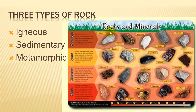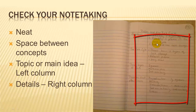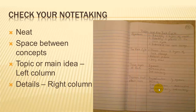There are three types of rock you need to know about: igneous, sedimentary, and metamorphic. Take a second to look at your notes. Make sure you're taking your notes in Cornell note format, which means the topic or main idea goes on the left side and the details go on the right. Good notes take space — don't squish everything onto one sheet of paper.